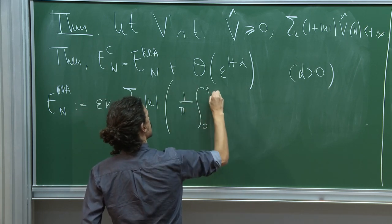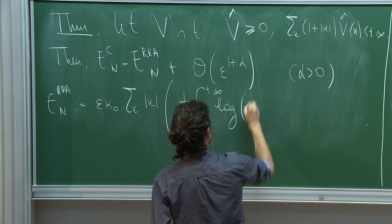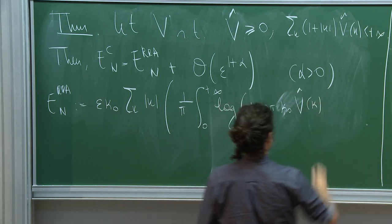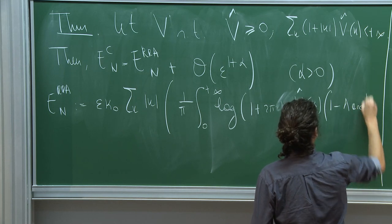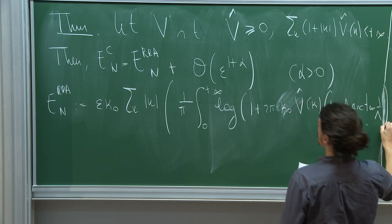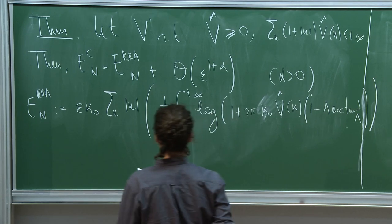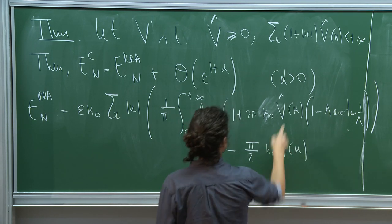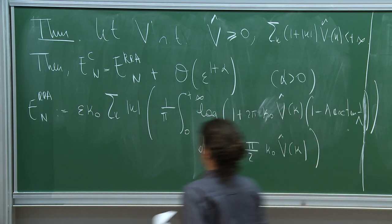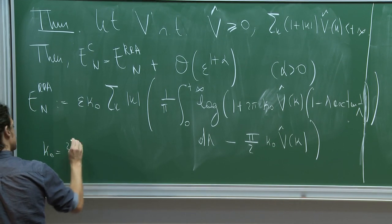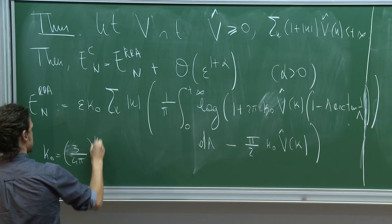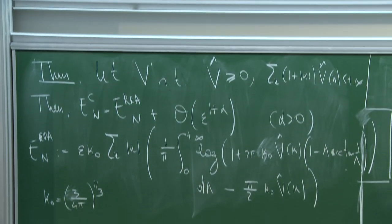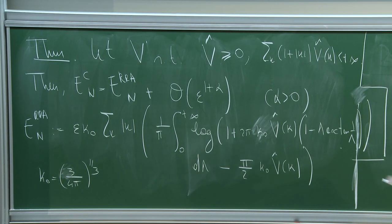E_RPA is a complicated but explicit expression: (1/π) times an integral of a log involving the function (1 − λ arctan(1/λ)) integrated in dλ, minus a term linear in V that cancels the first-order term in the expansion of the log. The constant k_0 is (3/(4π))^{1/3}. This corresponds to an infinite summation of a certain class of Feynman diagrams in perturbation theory.